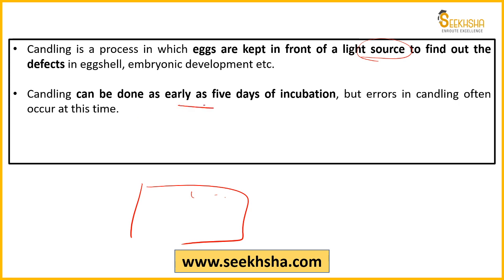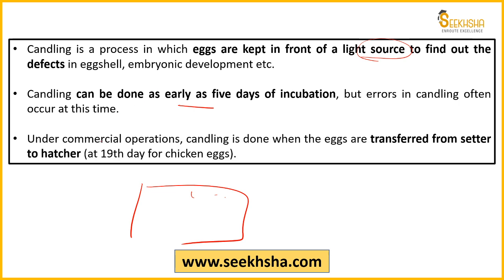Candling can generally be done 5 days before incubation, but if done that early, chances of error are high. In commercial operations where egg production is on a large scale, candling is done when eggs are transferred from the setter to the hatcher. The setter is where eggs are initially kept for incubation, and the hatcher is where eggs are taken after the 19th day when you want chickens to hatch.